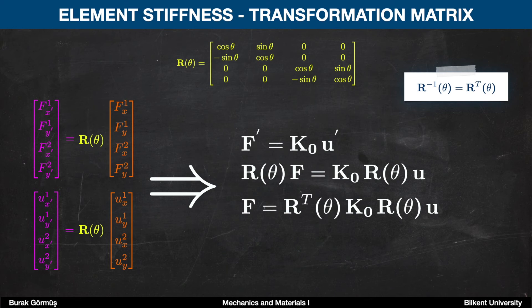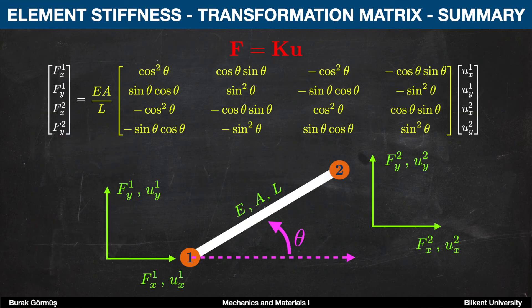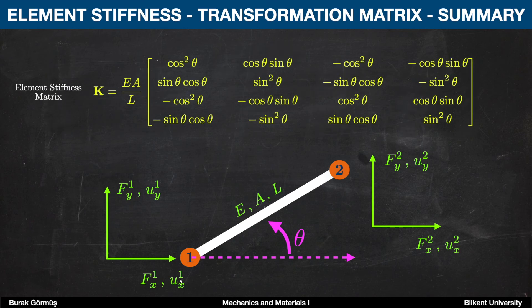Therefore, we manage to express everything in the global coordinate system if we say the stiffness matrix is equal to the transpose of the transformation matrix multiplied by K0 and the transformation matrix itself. As you can observe, everything here is in the global coordinate system, and we derived it from the local force and displacement equation by employing the transformation matrix concept. So in short, our element stiffness matrix is this 4x4 matrix as shown here in yellow while analyzing the deformation of a truss.